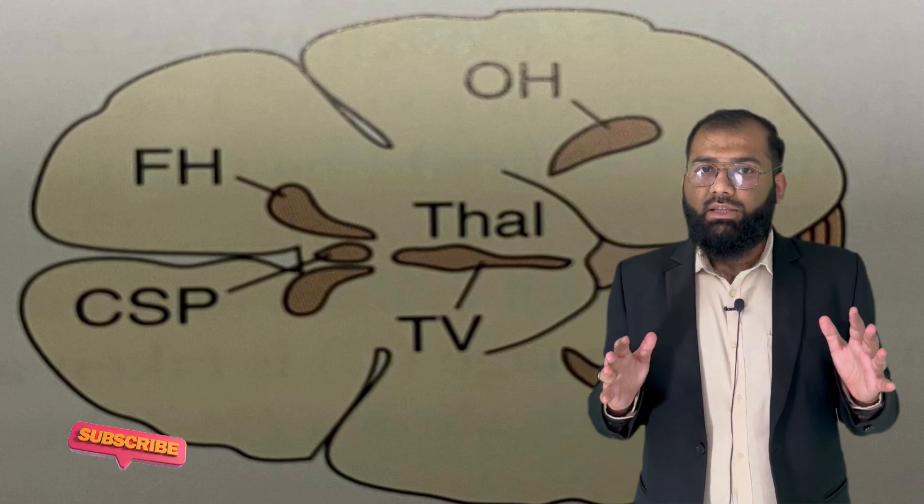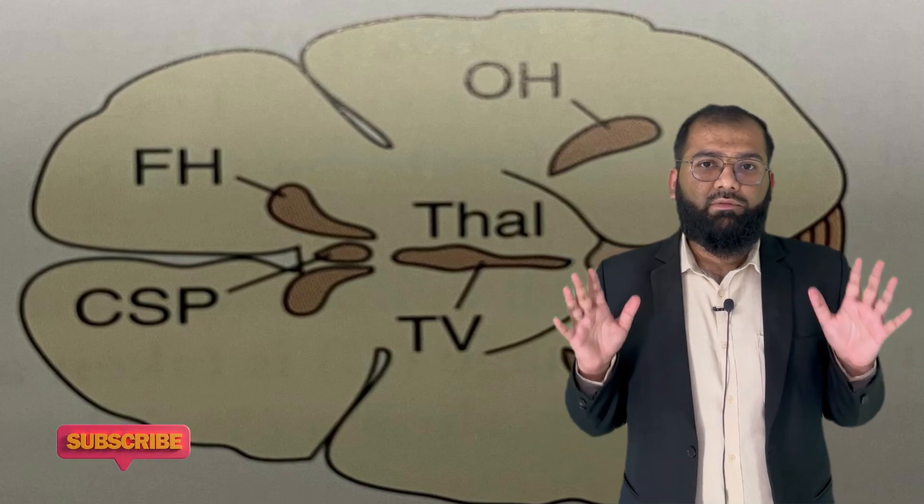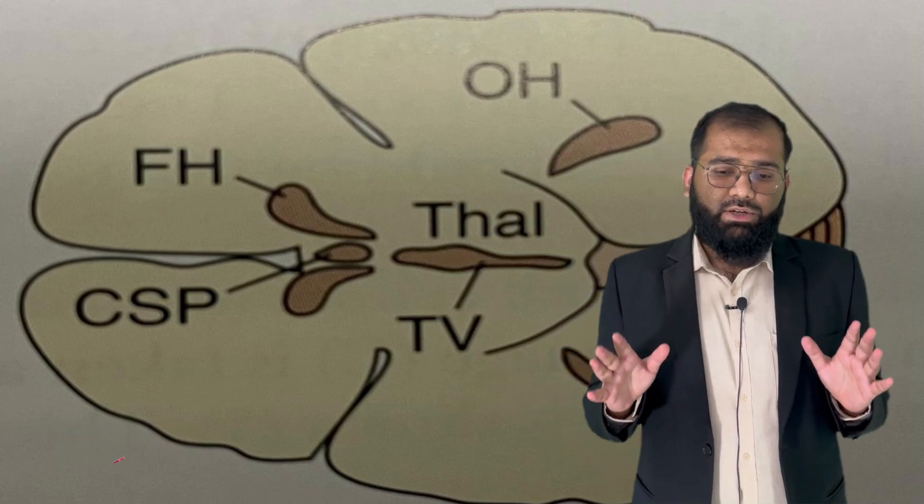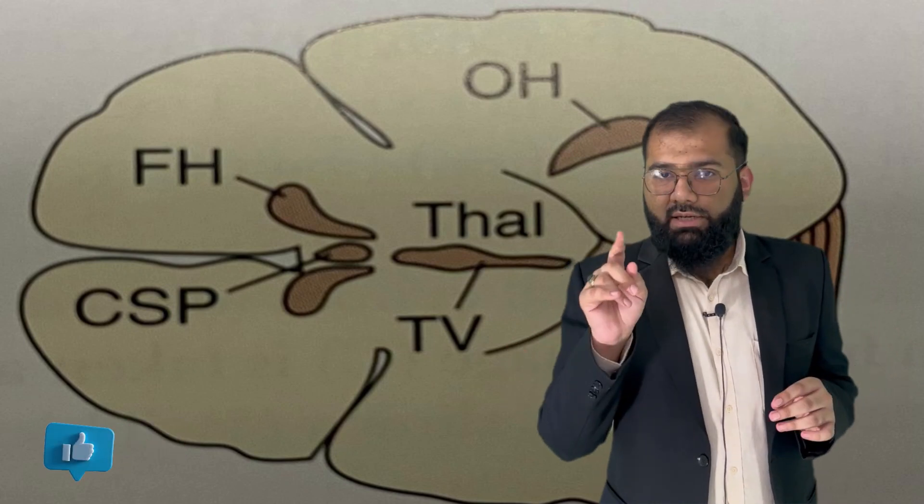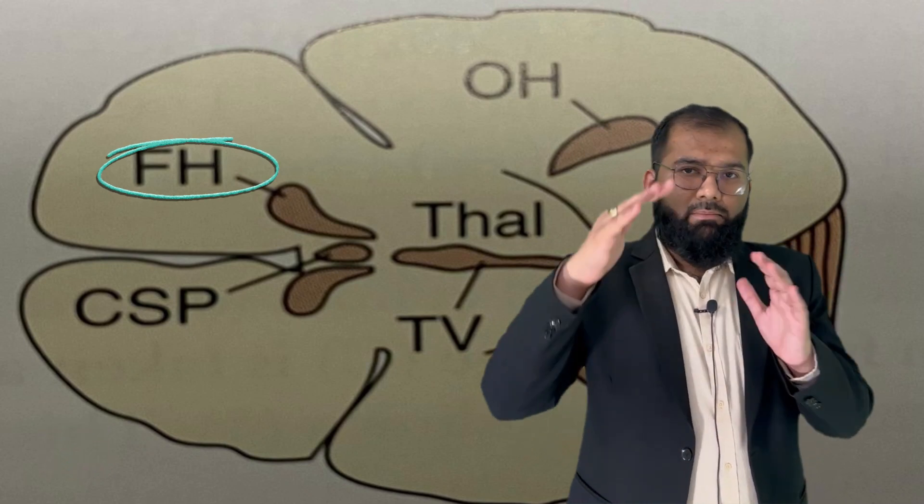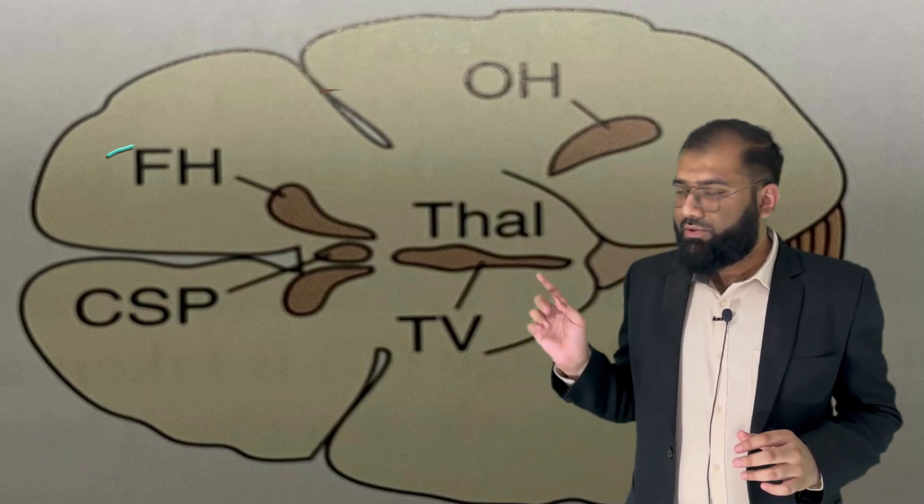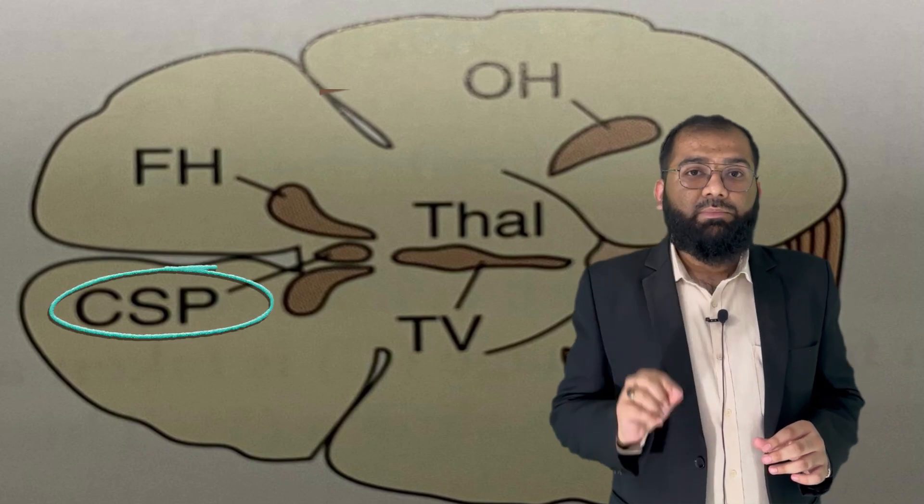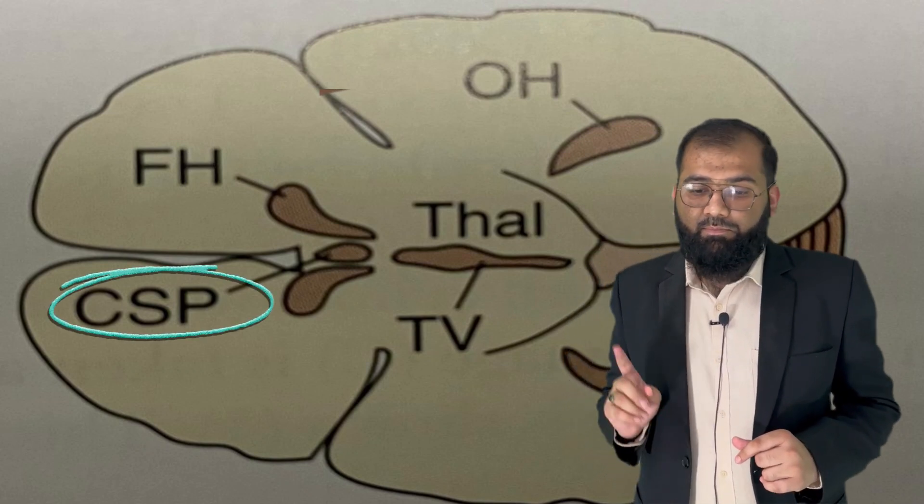In the image you can see the transverse section of the skull. It's an illustrated image where you can see two FHs. FH stands for frontal horn, and between two frontal horns you are able to see CSP, that is cavum septum pellucidum.